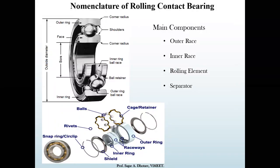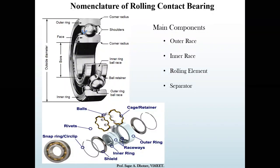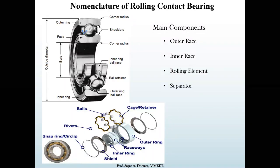The rolling element is held with the help of a retainer. In a ball bearing — which we are currently discussing — the rolling element is a ball, which is spherical in shape. The main function of the retainer is to provide a fixed position to the ball, keeping it in place.